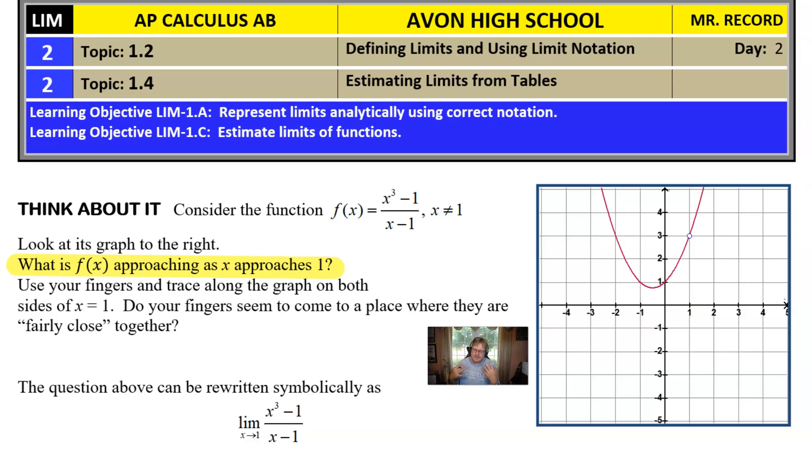So let's use our fingers and trace along this graph on both sides of x equals 1. I can't really do that for the purpose of this video, so instead I'll just use my pen and say my left finger, my left hand, would be riding along this part of the graph, while my right hand or right finger would be riding along that part of the graph.